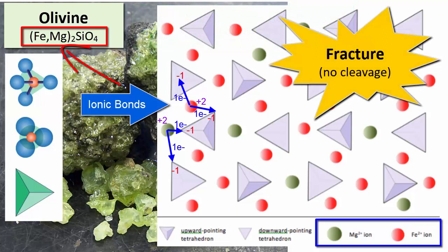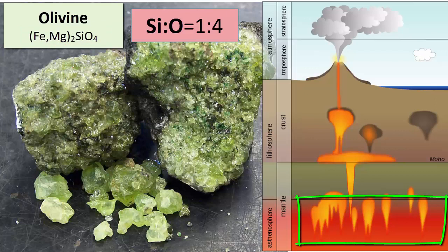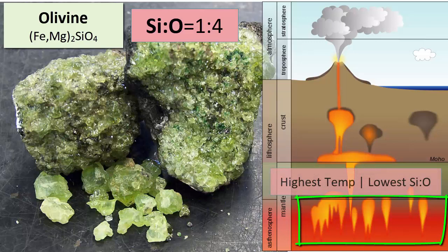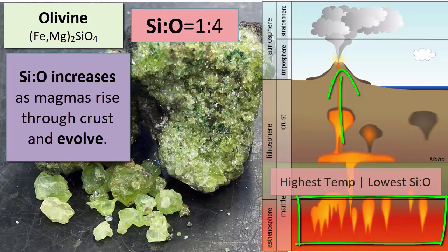Olivine also has the lowest silicon-oxygen ratio of all major rock-forming silicates, 1 to 4. It crystallizes from molten rock, magmas, underground at the highest temperatures, from magmas with the lowest silicon composition. It is one of the first minerals to form when magmas produced by melting the mantle rise through the crust and begin to cool. As magmas crystallize, the silicon content of the remaining melt will increase relative to the other ingredients. Similarly, the minerals that form will have increasing silicon-oxygen ratios.